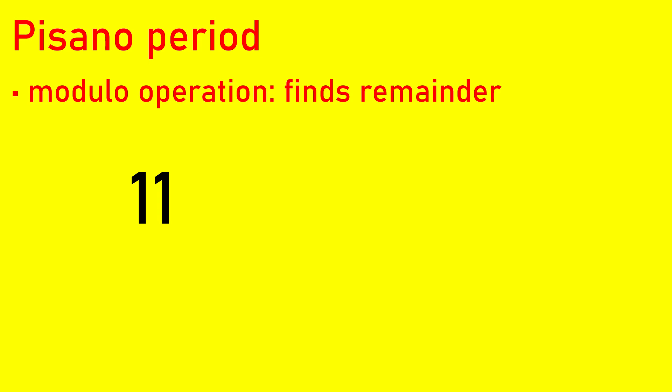So in order to understand Pisano periods, we have to understand the modulo operation. The modulo operation finds the remainder after you divide one integer by another. So if you remember when you learned about division, you probably learned about dividing a number, let's say eleven, by a divisor, let's say five. The result, also known as the quotient, was two.